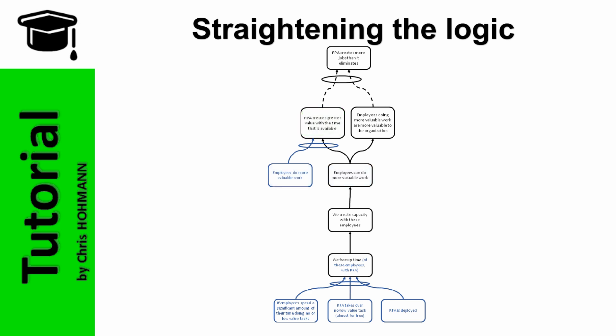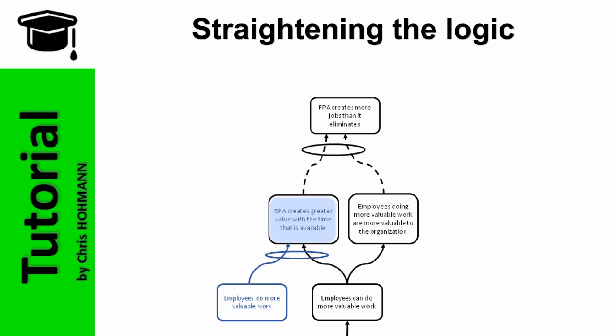If you look at the top of the tree, you can see that I represented the cause and effect relationship with dotted line. Because I cannot see how RPA creating greater value with the time that is available, and employees doing more valuable work are more valuable to the organization, will end up with RPA creates more valuable jobs than it eliminates as an effect. At best, this is what we call a long arrow, or a leap of logic, but here the leap is so big that I cannot figure out the missing steps in order to bridge the gap and to tighten the logic of the tree.